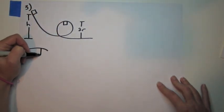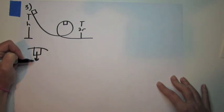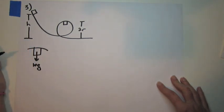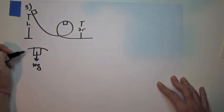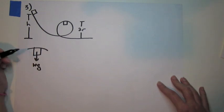Here's a free body diagram for it once at the top. We always have mg pointing down. If it's going really fast, there's also a normal force—it would also be a force of the track pushing it downward.